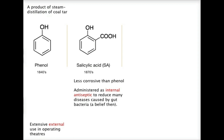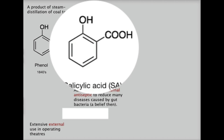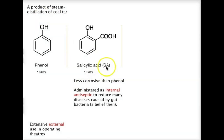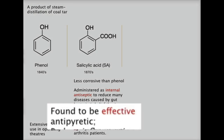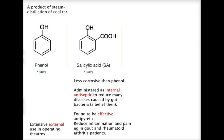Back then there was a belief that if you changed the phenol group a bit — added on the carboxyl acid — in this case making salicylic acid — and taken internally, it could act as an internal antiseptic to reduce infection by gut bacteria. It's also less corrosive than phenol. It was a success because it was found to be effective in reducing fever, and therefore effective as an anticoagulant. It was also found to reduce inflammation and pain for arthritic patients.